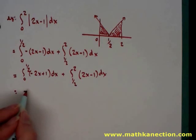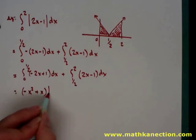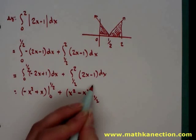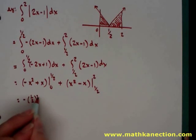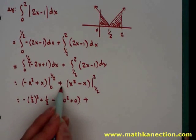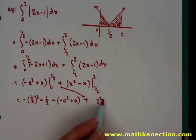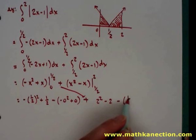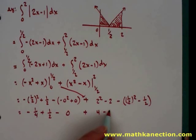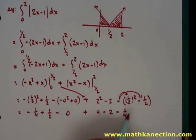Distributing the negative on our first integral, we antiderive to get negative x squared plus x, evaluated from 0 to one-half. For the second integral, we get x squared minus x, evaluated from one-half to 2. Following the first fundamental theorem of calculus, we substitute in one-half to get negative one-half squared plus one-half, then subtract substituting in 0. For the second integral, we substitute in 2 and subtract substituting in one-half. Don't forget to distribute your negative sign when working with your problem.